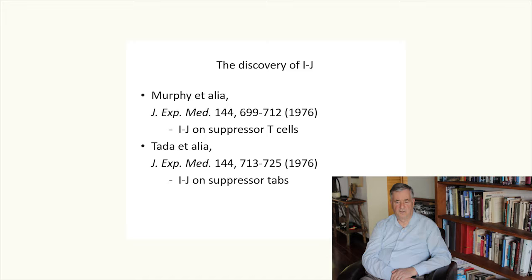There was a very important discovery made in 1976, the discovery of IJ. IJ were serological determinants present on suppressor T cells and suppressor T cell factors. The phenomenon was reported in back-to-back papers published in the Journal of Experimental Medicine, which was the premier journal for immunology in those days.